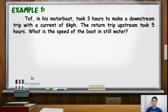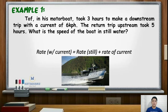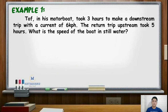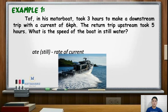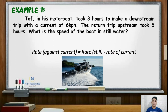Moreover, the rate of an object going with the direction of the current is: rate equals rate of the object in still water plus the rate of the current. Lastly, the rate of an object going against the current is equal to the rate of the object in still water minus the rate of the current.